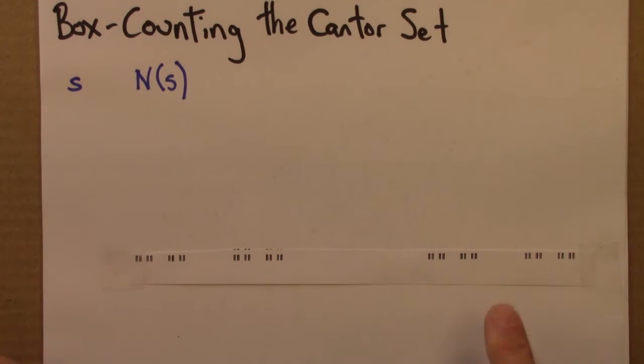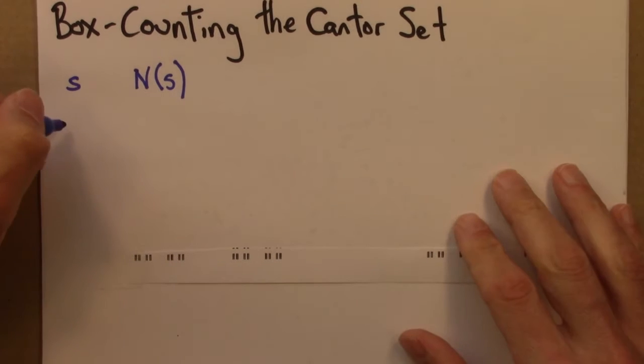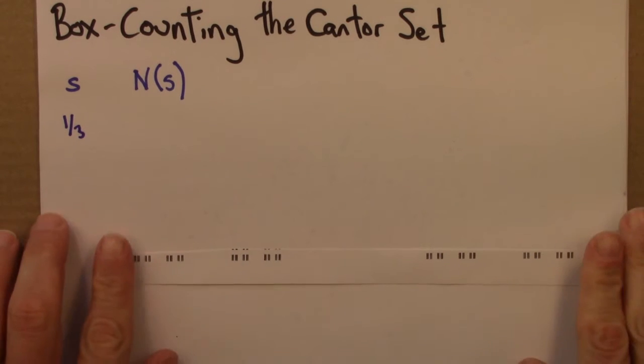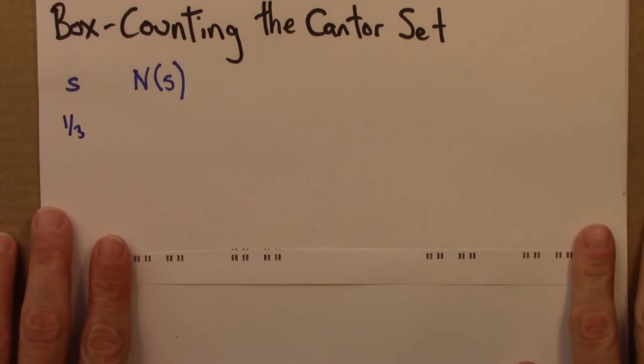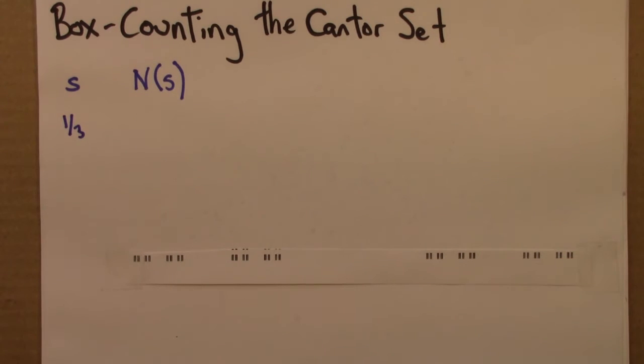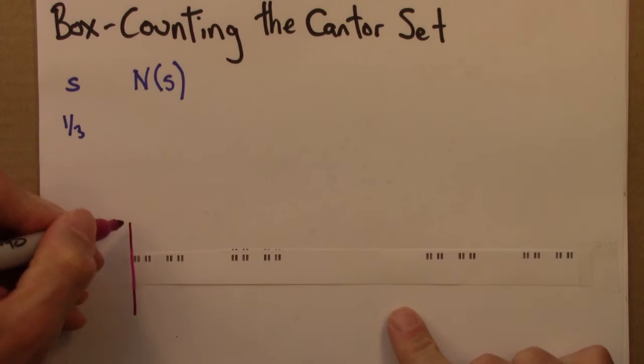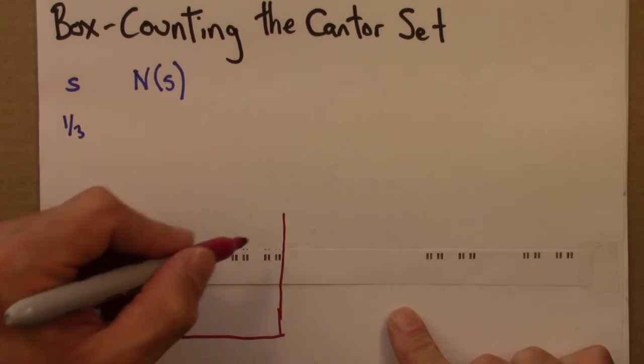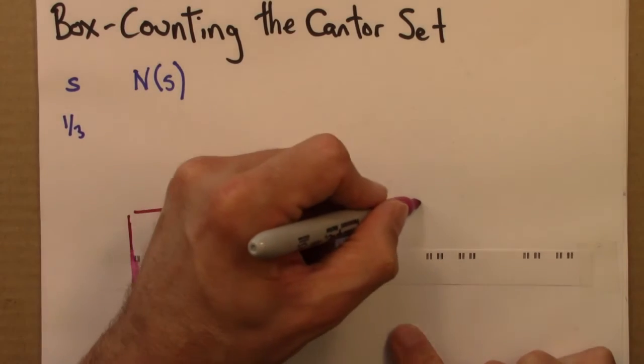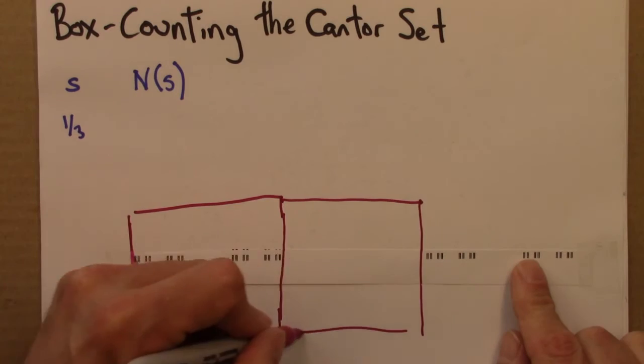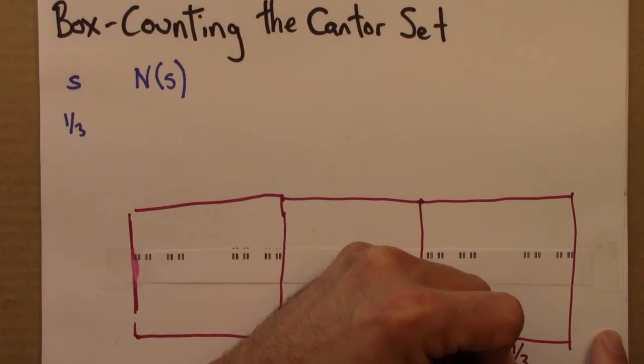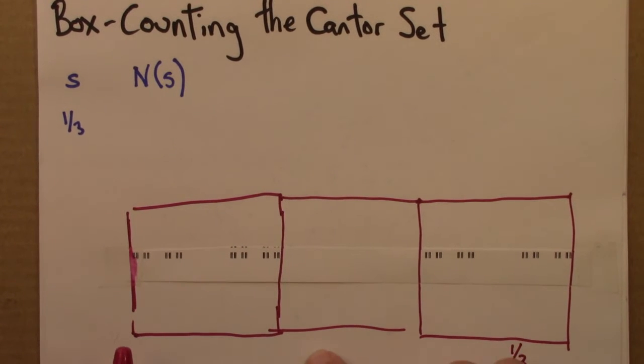And so we want to know how many boxes of side a third it takes to cover the shape. So this length is a length of one, and so this is a third and that's a third. So I can draw on...let's see here... So there are three boxes with side a third.